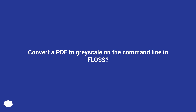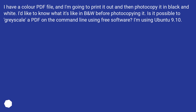Convert a PDF to grayscale on the command line. I have a color PDF file and I'm going to print it out and then photocopy it in black and white. I'd like to know what it's like in B and W before photocopying it. Is it possible to grayscale a PDF on the command line using free software? I'm using Ubuntu 9.10.